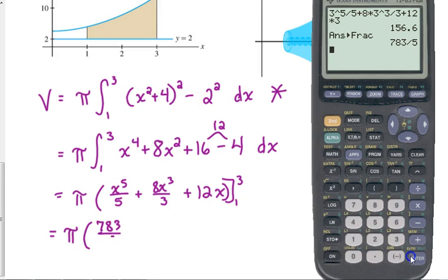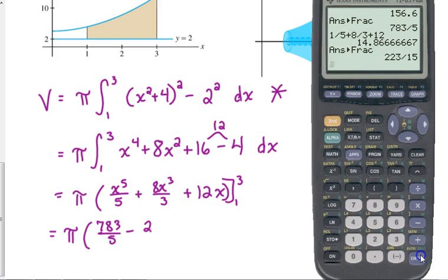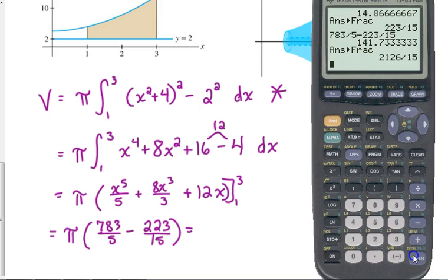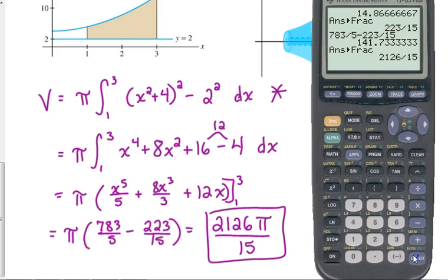That's the first part: 783 over 5 minus, when you plug in 1, we get 1/5 plus 8/3 plus 12. So 783 over 5 minus 223 over 15. This would have been way more efficient on your calculator. Sometimes you do get really weird looking answers like this. Don't be freaked out by that when you're doing these problems because there are lots of fractions involved. Sometimes it does get weird. Don't automatically think that you're wrong because you get something weird like that.